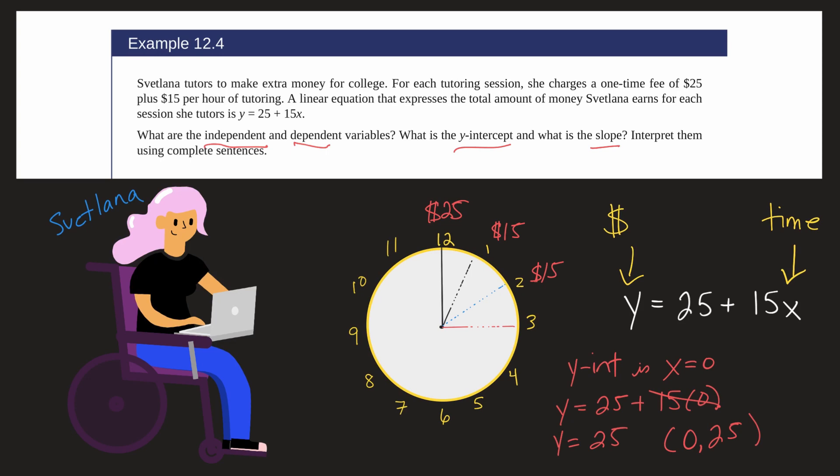Now, what is the slope? So if you remember y equals mx plus b, we can rewrite it as y equals b plus mx. And in this case, our m, which is our slope is 15. For each one hour she tutors, she earns 15 more dollars.